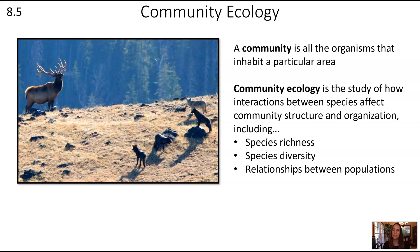A community is all the organisms that inhabit a particular area. That includes animals, plants — in this picture you can see wolves, elk, grasses, and trees in the background — but also all the organisms you can't see: microbes in the soil, fungi, bacteria living in and on the animals and plants, and probably parasites. So it's all of the organisms in the environment.